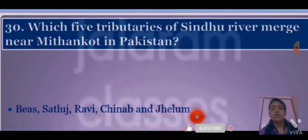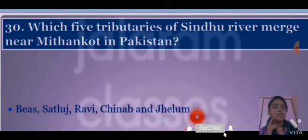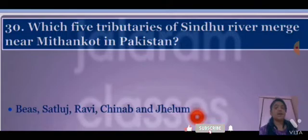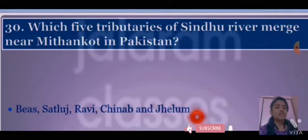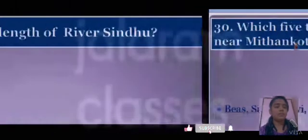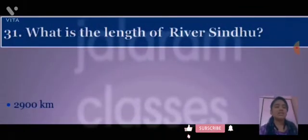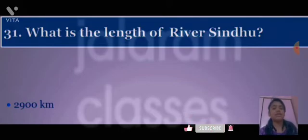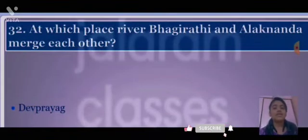Which five tributaries of the Sindhu river merge near Mithankot in Pakistan? Answer: Beas, Satlunj, Ravi, Chenab, and Jhelum. What is the length of the river Satlunj? Answer: 2900 kilometers.